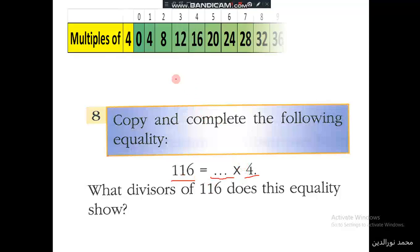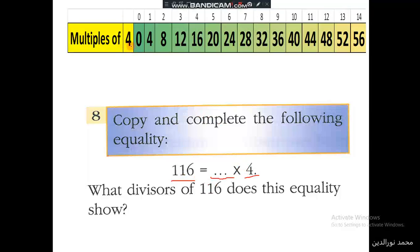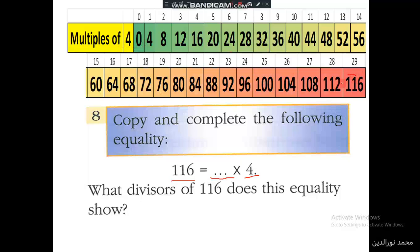We wrote the multiples of 4 starting from 0, and we notice that 116 is here. So 116 is 4 times 29. We put 29.